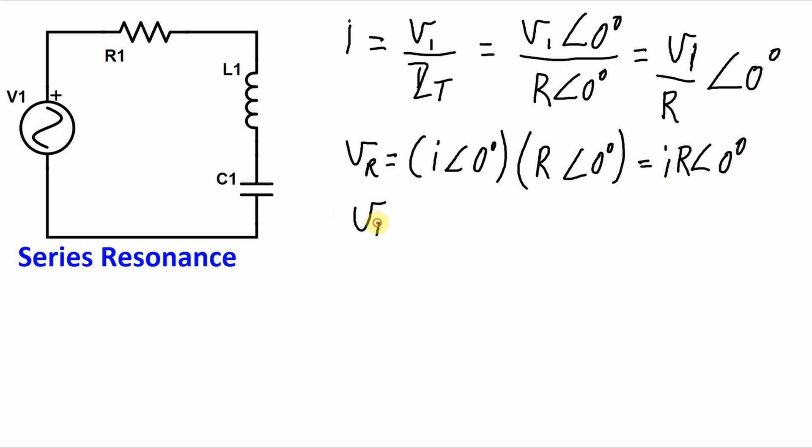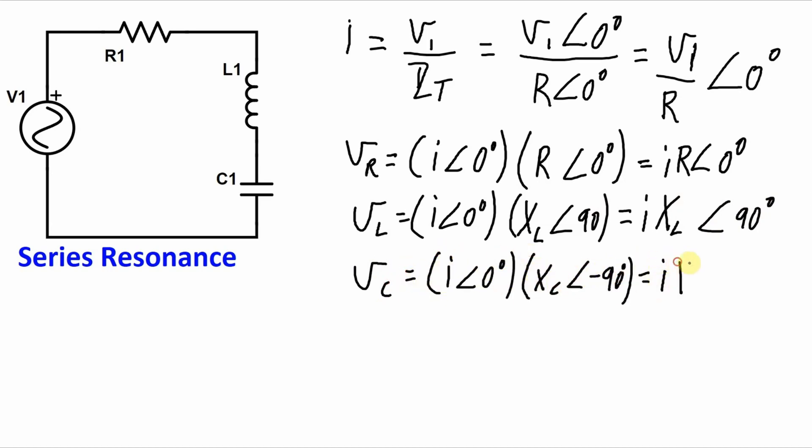For the inductor, again, current times impedance, which is the inductive reactance with a phase angle of 90 degrees. So we get IXL with a phase angle of 90 degrees. And the capacitor, again, current times impedance, so that will be IXC with a phase angle of negative 90 degrees.